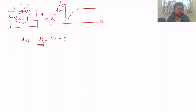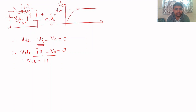Then negative VC, equal to zero. VR is the voltage across the resistor, which is IR. So the equation becomes VDC = IR + VC. Let's call this equation number one.